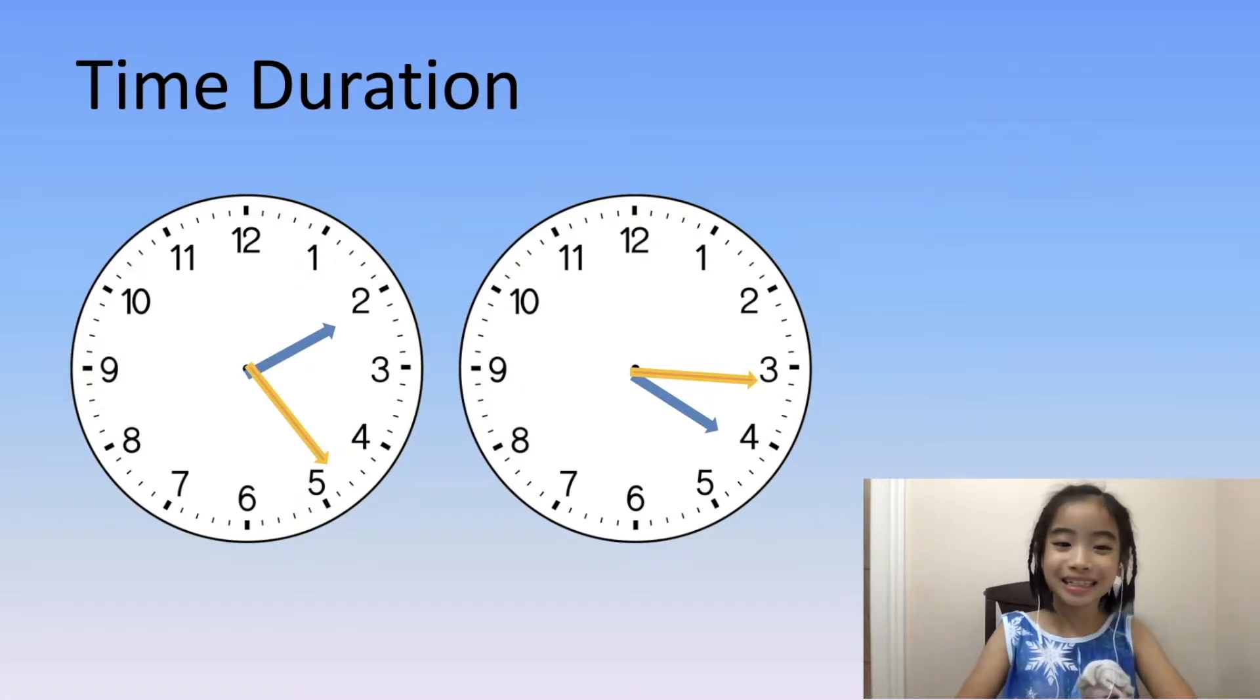Now, let's do another example. Here, the clock to the left is 2:24, and the clock to the right is 4:16.